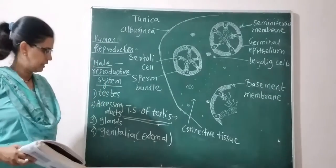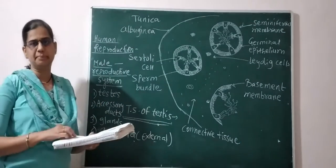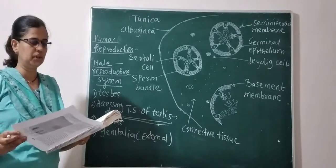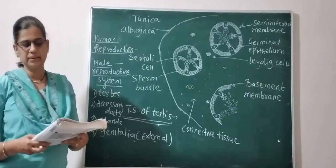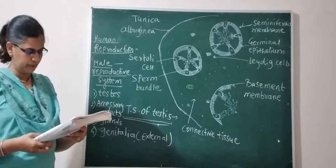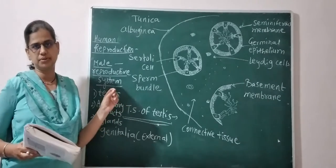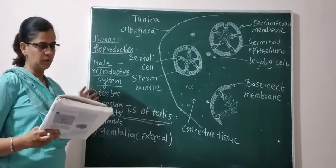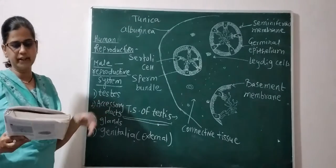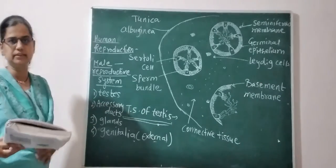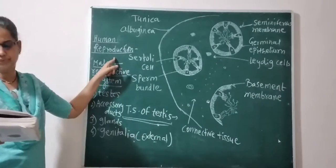In the last section we discussed, and now we start our new chapter that is human reproduction — reproduction in lower and higher animals. In that particular section we discuss sexual reproduction in animals, in lower organisms and sexual reproduction in animals. Here we discuss specifically human reproduction.